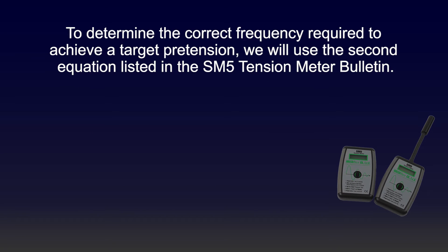On the other hand, to determine the correct frequency required to achieve a target pretension, we will use the second equation listed in the SM5 tension meter bulletin. This equation f equals the square root of Fv divided by L squared times 4 times m times b.